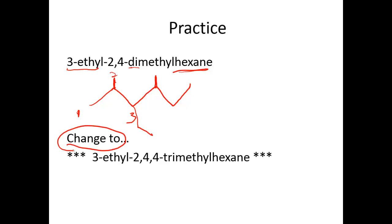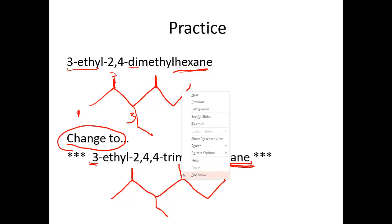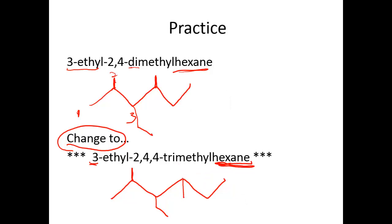Now we need to change this up slightly. The next example is 3-ethyl-2,2,4,4-trimethylhexane. Starting with our parent chain, hexane: one, two, three, four, five, six carbons. 3-ethyl: off the first, second, third carbon we need our ethyl group. Trimethyl means three different methyl groups — one at the second carbon, one at the third carbon, and one at the fourth carbon. So in the end it's 2,2,4,4-trimethyl and 3-ethyl off of a six-carbon hexane chain.